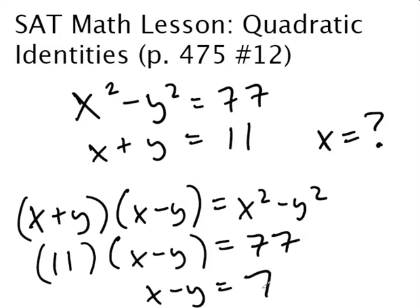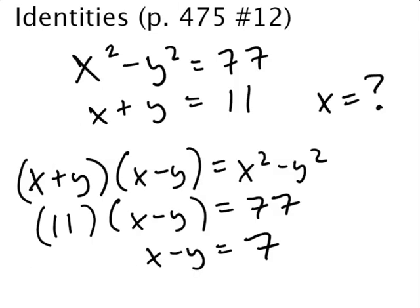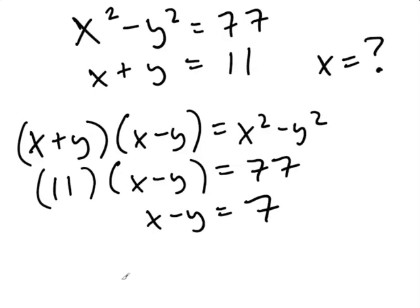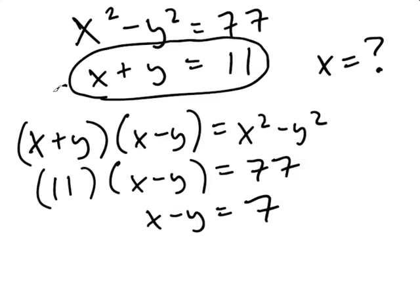So x minus y equals 7. How are you going to solve for x? Well, it's actually pretty easy now. This just becomes a simultaneous equation. So what you can do when you have a simultaneous equation is take this equation and bring it down here. We put the x's above the x's, the y's above the y's.